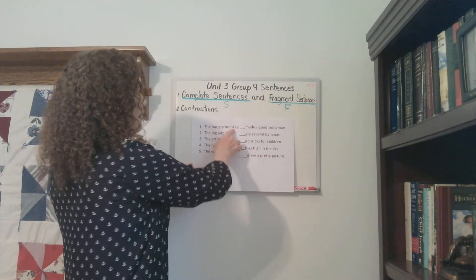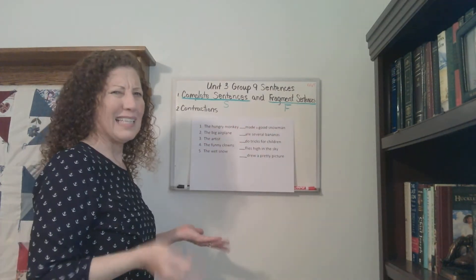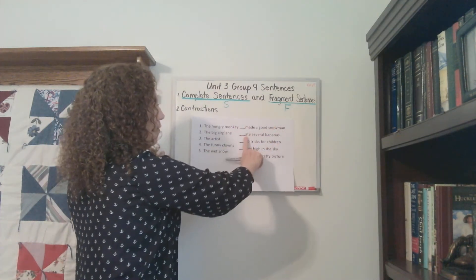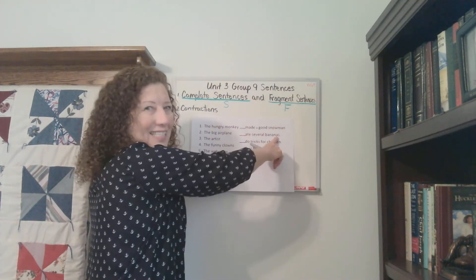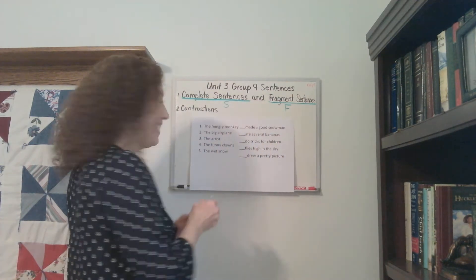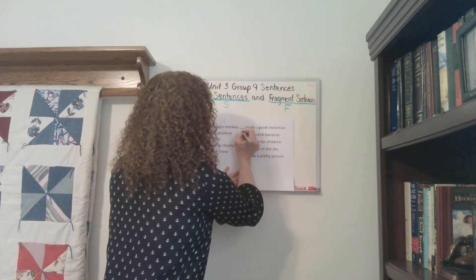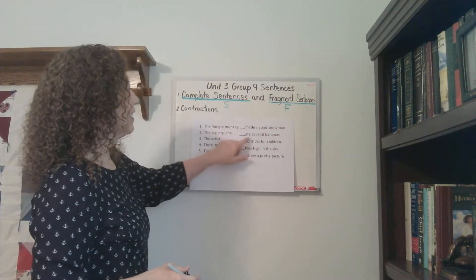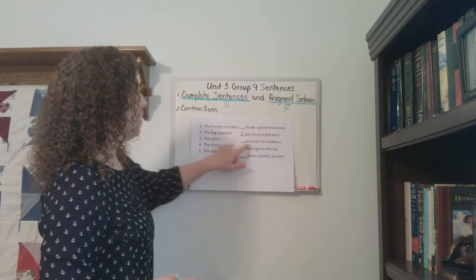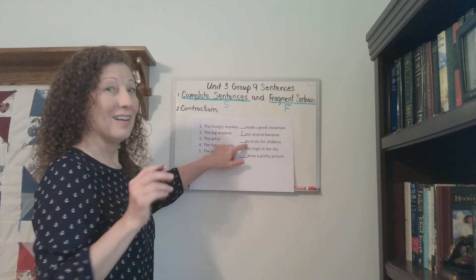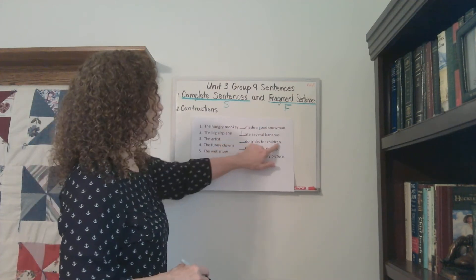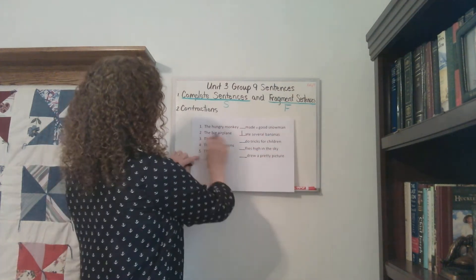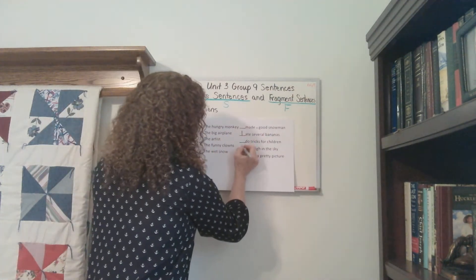Alright, the hungry monkey — the hungry monkey what? Made a good snowman? No. Ate several bananas. Do monkeys like to eat bananas? Yes. So that would be number one. The big airplane — made a good snowman? What do airplanes do? They fly, don't they? Do tricks for children? Flies high in the sky — there you go. The airplane flies. So that's going to be number two.